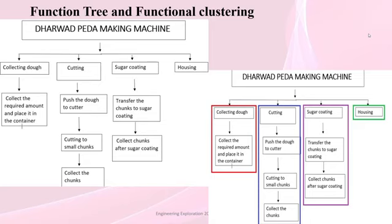In the collection of dough, the required amount of dough is placed in the container. Through the screw feeder, it then enters the cutting area where the dough is cut into small chunks. These chunks are then transferred to the sugar coating unit where the chunks are sugar coated.